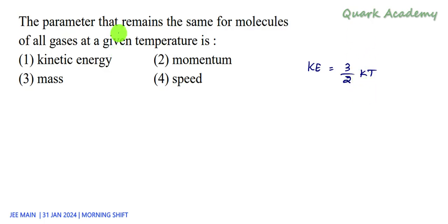For momentum, we generally write it as M into V, and M is something which is going to change with respect to molecules of different gases. For example, oxygen will have different molecular mass and nitrogen gas will have different molecular mass.